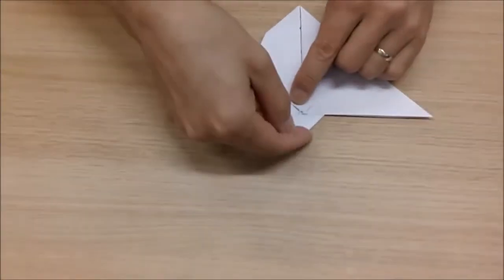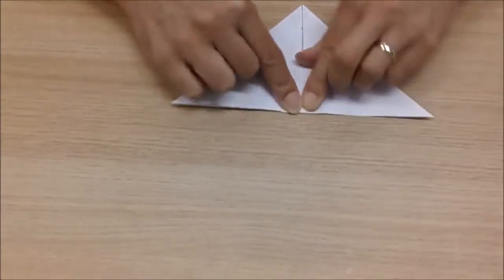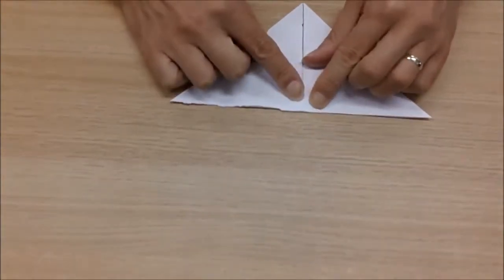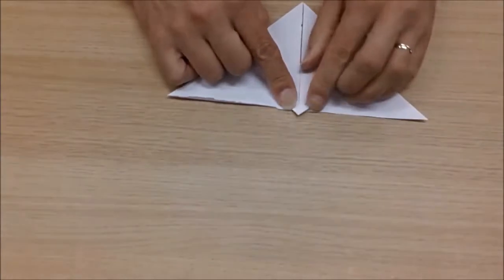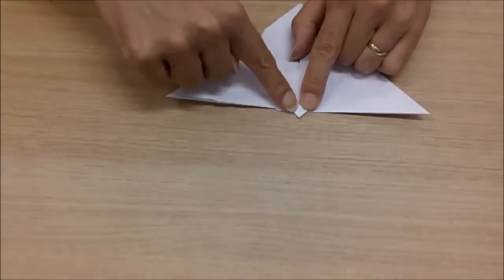Next we turn the model back over again. This triangle here poking out the top, we fold it down along this edge here once. And then around about halfway, we then fold it back to form the head of the butterfly.